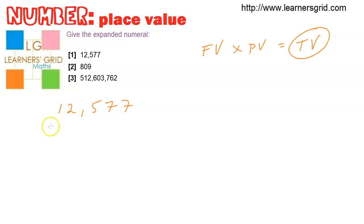So it looks a bit like this. Face value is one times the place value, which is the tens of thousands, plus two face value times place value, which is a thousand, plus face value of five times the place value, which is a hundred.